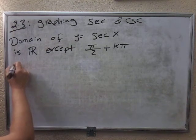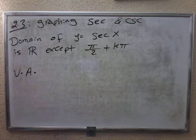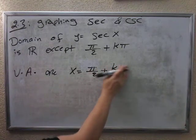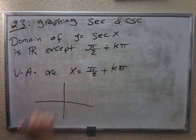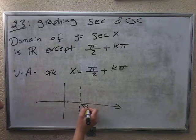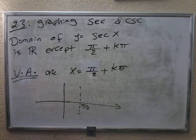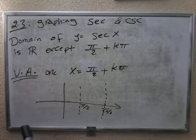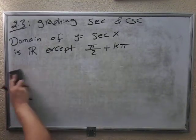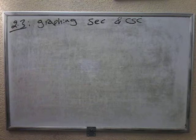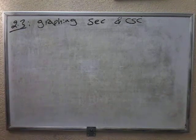The vertical asymptote equation is x equals pi over 2 plus k pi. When we say the domain is all real except these numbers, for example at pi over 2 we have a vertical asymptote — a dotted line. The next one will be 3 pi over 2, and we'll have another vertical asymptote there. Make sure that every pi over 2 you have a vertical asymptote. Your domain is all real, from negative infinity to positive infinity, except for pi over 2 plus k pi.